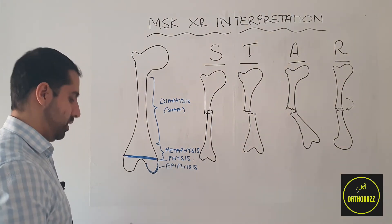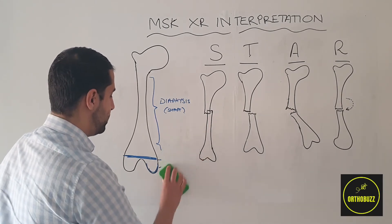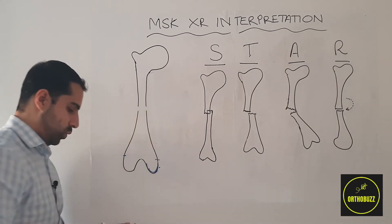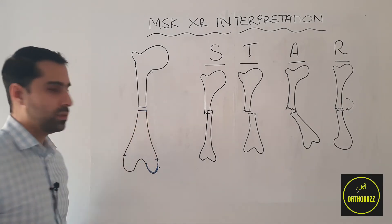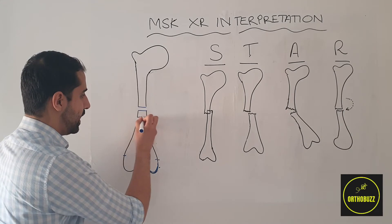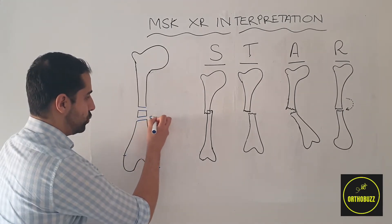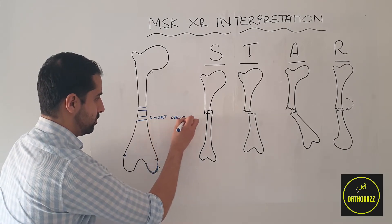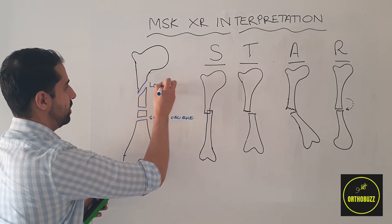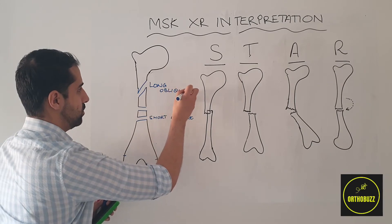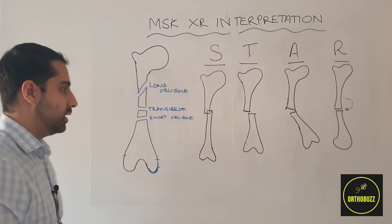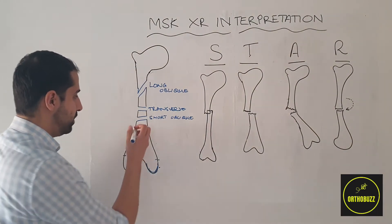Once we've identified which part of the bone has the fracture or abnormality, we need to look at what type of fracture pattern we have. We may have a transverse fracture — a horizontal type fracture. Other fracture patterns include oblique fractures, which are at an angle to the horizontal plane. These may be short oblique or long oblique. If there's more than one fracture in the same place or part of the bone, this may be termed multifragmentary or comminuted.